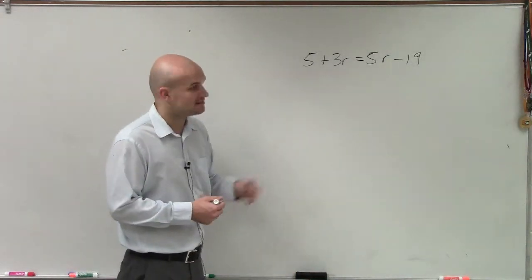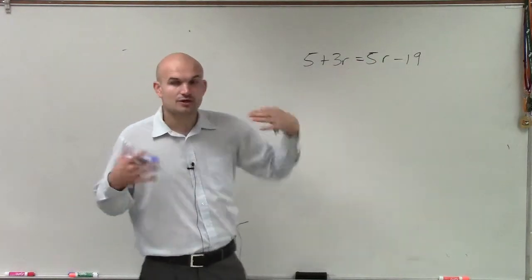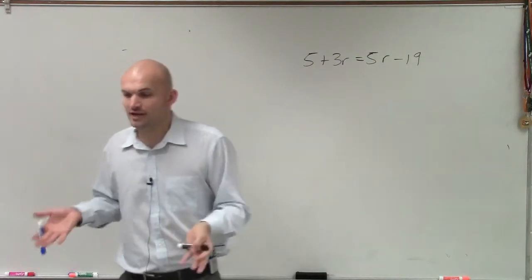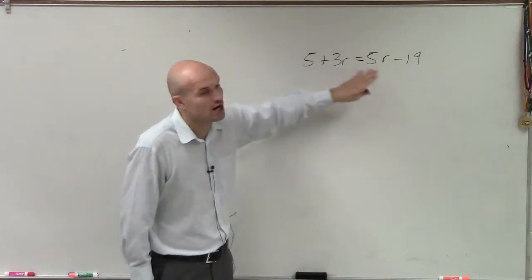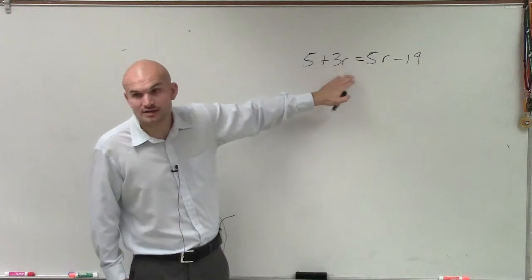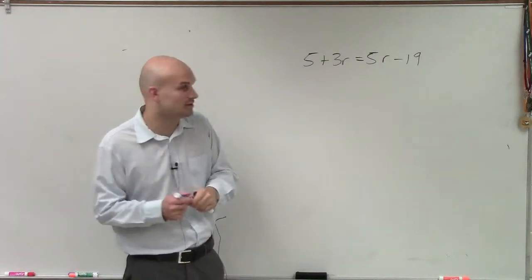So to do that, I either need to get the r's on the right side or on the left side. Usually what I like to do is get rid of the smallest r value. So I have 3r and 5r. 3r is smaller than 5r, so that's what I'm going to want to eliminate.